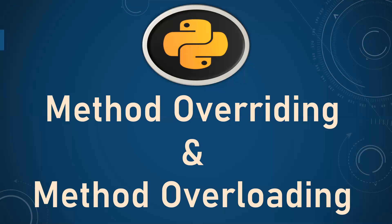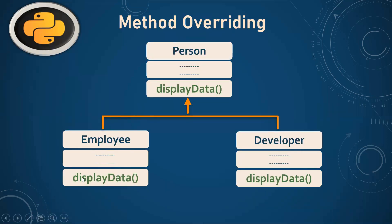However, in some situations it is possible to modify in the child class a method inherited from the parent class. Here, Employee and Developer are child classes, and if the child class wants to modify some features of the parent class, we re-implement the method. So I've defined 'display_data' in the parent class and the same method in the child classes — the same method name but different functionalities in each class. Using the parent or child class you can call the method respectively, and that method will have different features in each. Let's take an example based on method overriding.